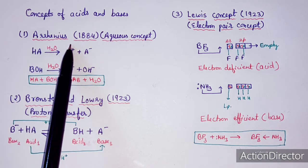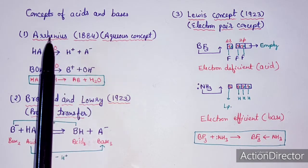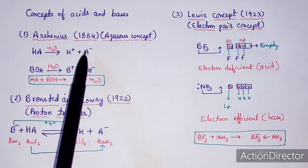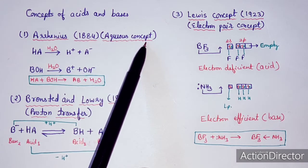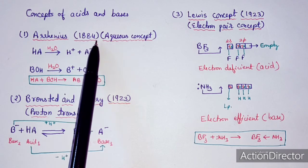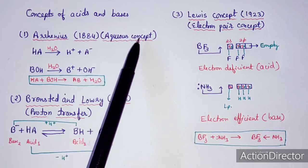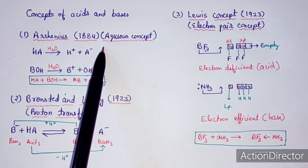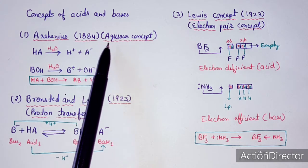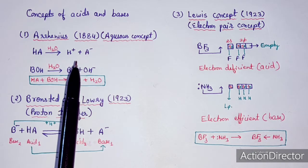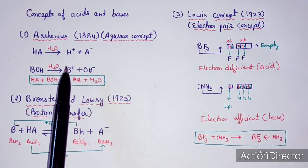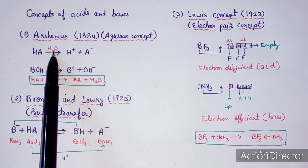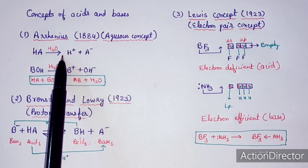The first theory of acids and bases was the Arrhenius theory, given by Arrhenius in 1884. This concept was also known as the aqueous concept, because the definition of acid and base was based on their dissolution in the aqueous medium. For example, an acid in the presence of aqueous medium gives hydrogen ions — H⁺ ions.